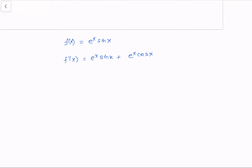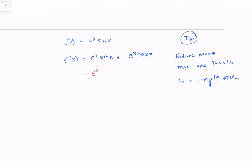There are three functions involved, and whenever there are more than one trigonometric function in a particular expression, here is a tip: reduce more than one trig ratio to a single one. This is not only true for graphing problems — in general, for any problem, you always want to reduce the number of types of functions you're working with. It makes your work easier in most cases.